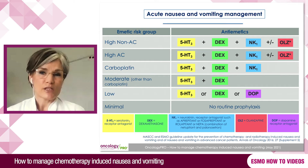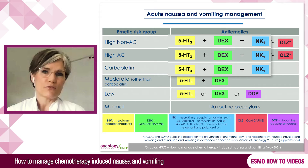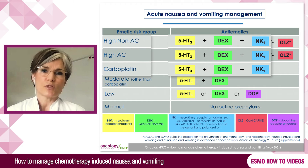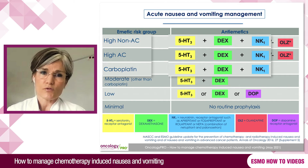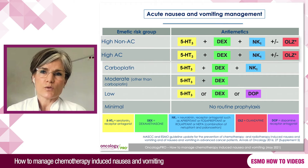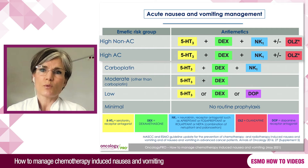For the prevention of acute CINV, we use a triplet combination of a 5-HT3 receptor antagonist, corticosteroid, and NK1 receptor antagonist — both for patients receiving highly emetogenic chemotherapy, anthracycline and cyclophosphamide, and carboplatin. In cases where nausea is of special concern for the high emetogenic risk group, we can add on olanzapine.